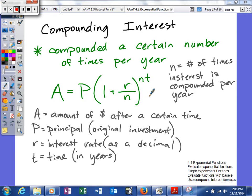If you're planning to basically make some money, obviously you're going to invest that money. And a lot of times when you invest your money in a bank, they'll compound your interest. One way to do this is if your interest is compounded a certain number of times per year. You will use this formula A equals P, parentheses 1 plus R over N to the NT power.